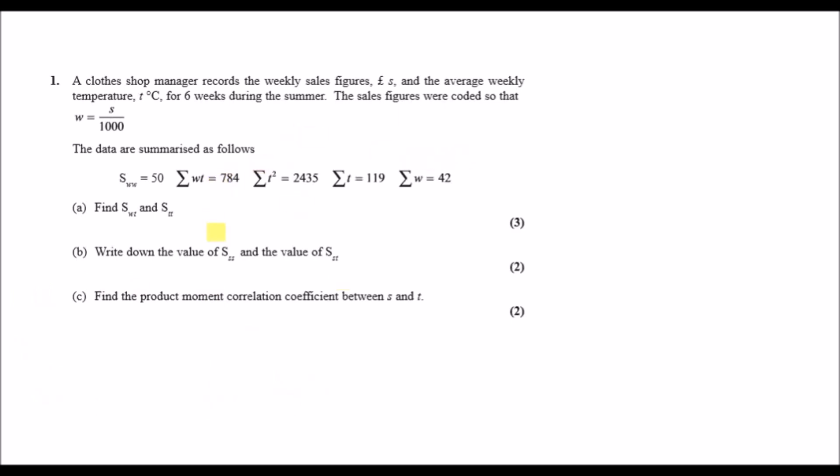The data are summarized as follows. So you're given the usual stuff - the sum of squares for W, the sum of WT and so on. Now simple sum of squares regression: find SWT and ST. SWT using just the standard formula will be the sum of WT minus the sum of W times the sum of T all over the number of weeks, so over 6.